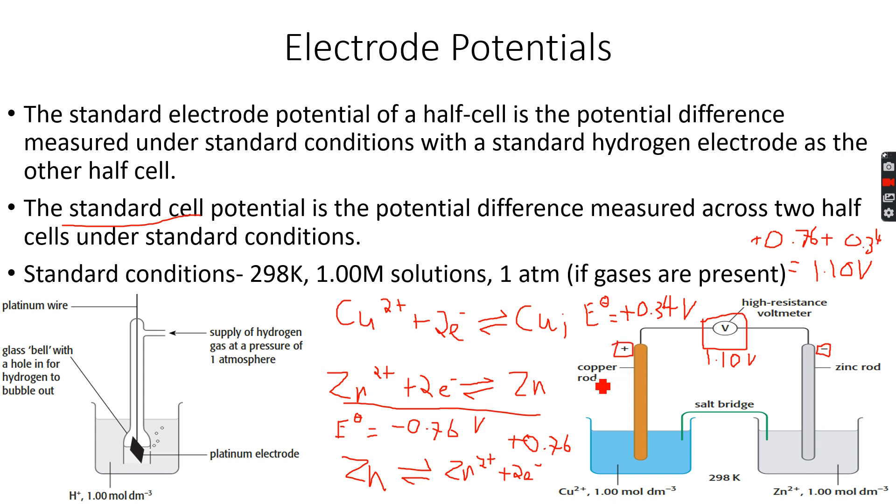You know that zinc is likely to lose electrons more readily. So as it is losing electrons more readily, zinc becomes the negative electrode. Because copper is accepting the electrons more readily, it is called the positive electrode.